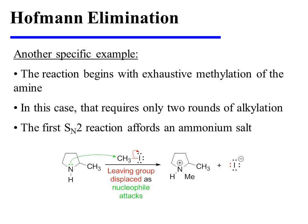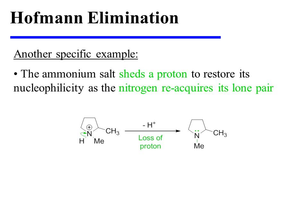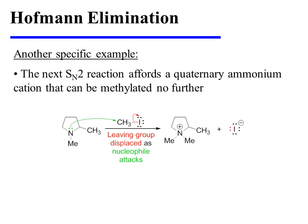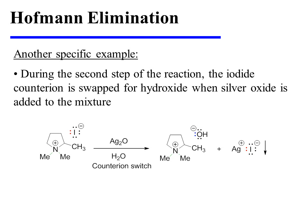The reaction begins with exhaustive methylation of the amine. In this case, that requires only two rounds of alkylation. The first SN2 reaction affords an ammonium salt. The ammonium salt then sheds a proton to restore its nucleophilicity as the nitrogen reacquires its lone pair. The next SN2 reaction affords a quaternary ammonium cation that can be methylated no further.